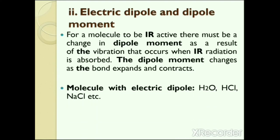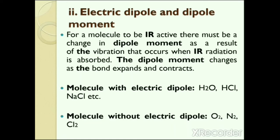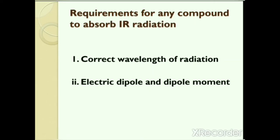For example, molecules like H₂O, HCl and NaCl contain an electric dipole, so these molecules will be infrared active. Molecules like O₂, N₂ and Cl₂ do not contain any electric dipole, so these compounds will be infrared inactive. The final verdict is that any compound will absorb infrared radiation only when it fulfills these necessary conditions.